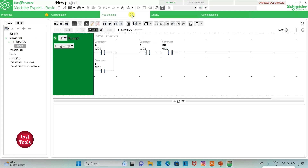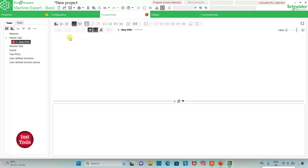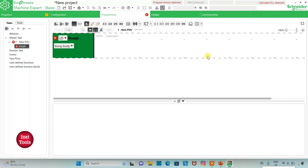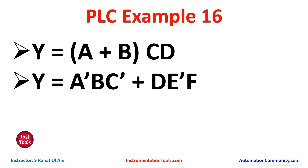We will exit full-screen mode, go to commissioning and stop the simulator, then go to programming, delete this rung, and add a new rung. Here we will draw a ladder diagram for the next expression: A'BC' + DE'F. There is an AND gate with A', B, and C', and another AND gate with D, E', and F, and then an OR gate with the output of A'BC' and DE'F.